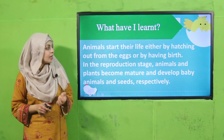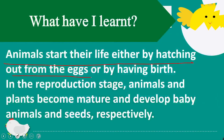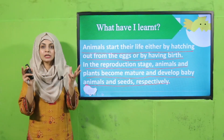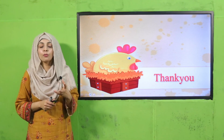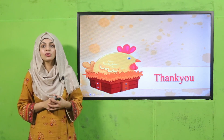What have we learnt today? Animals start their life either by hatching out from their eggs or by having a live birth. In the reproduction stage, animals and plants become mature and develop baby animals and seeds respectively. Now you are also able to tell about the life cycle of animals, just like the life cycle of plants. I hope you have learnt a lot about animal life cycle today. Keep everybody around you safe. Have a good day. Thank you so much and Allah Hafiz.